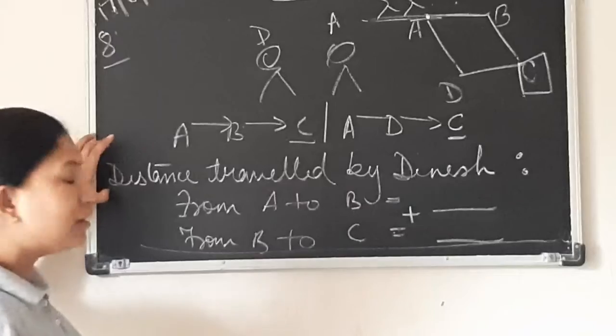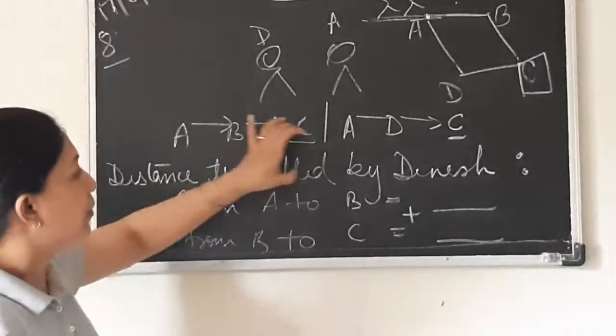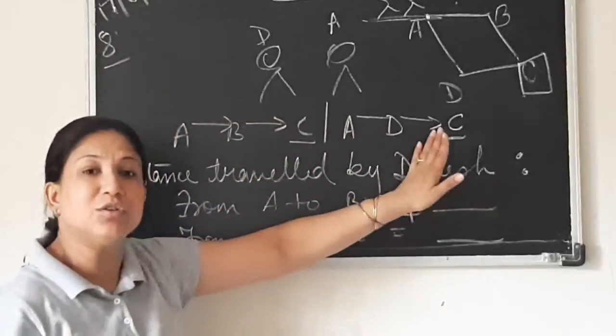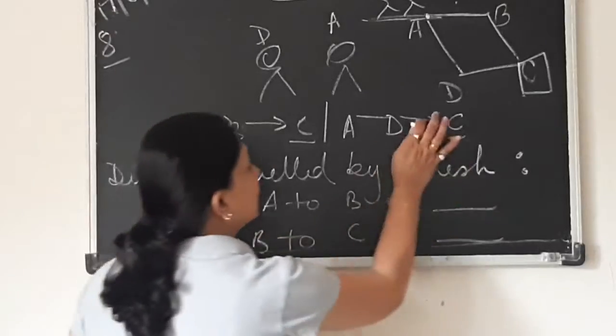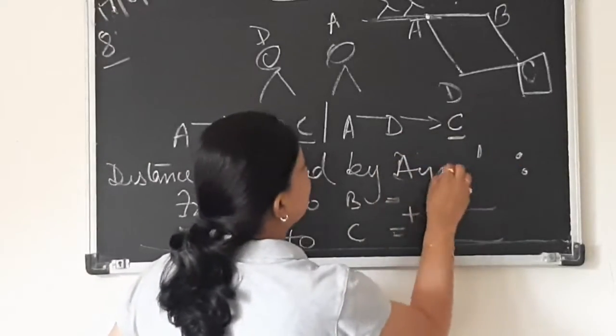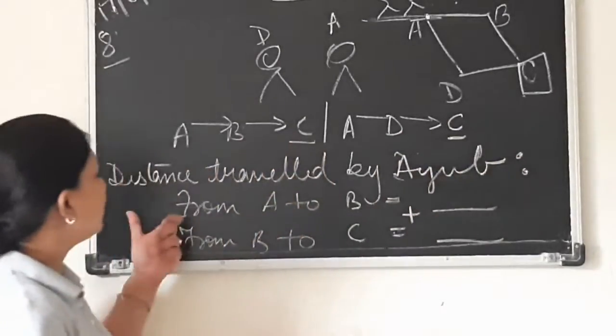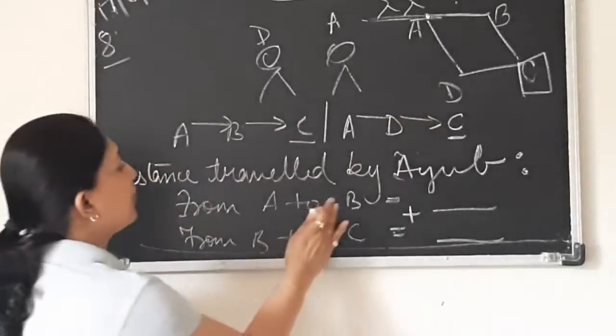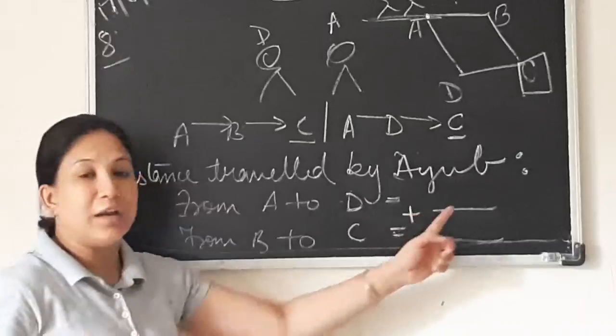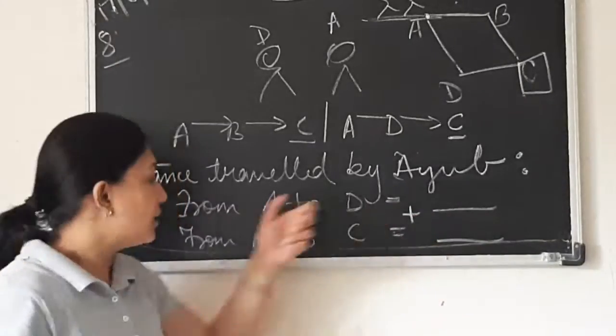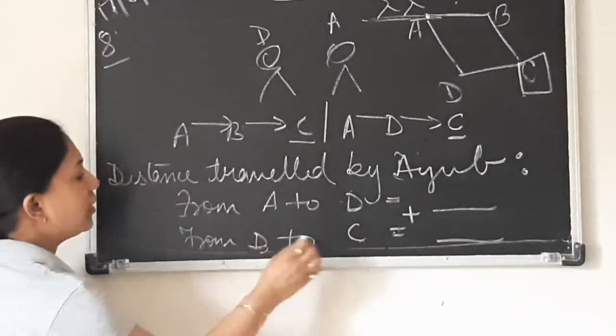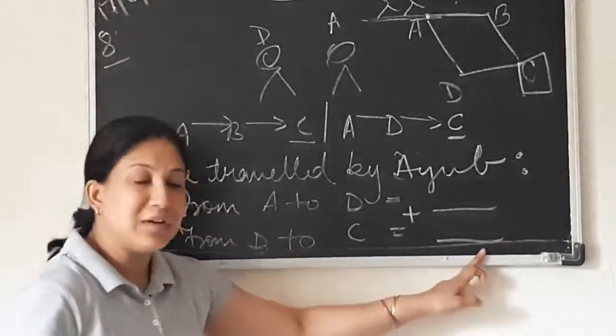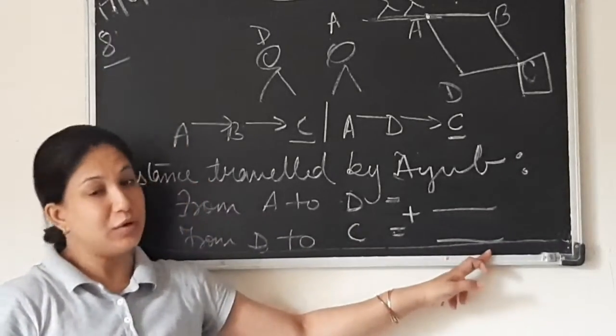Then you will write down again the same line: distance travelled by, instead of Dinesh, you will write down Aiyu. Again, from A, which route he has selected? D. So from A to D, write down the distance. What is given? Then from D to C, whatever distance is given in your book, you will write down.